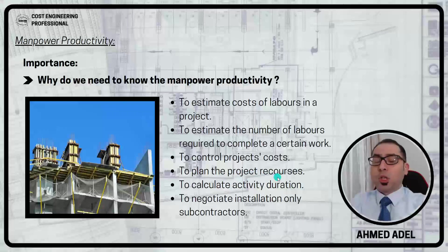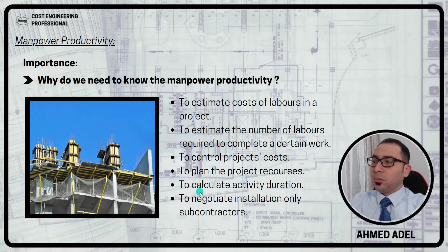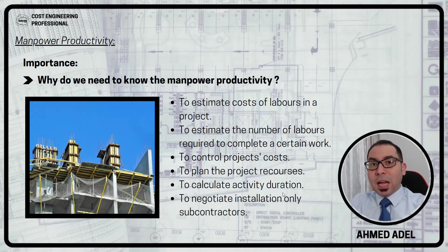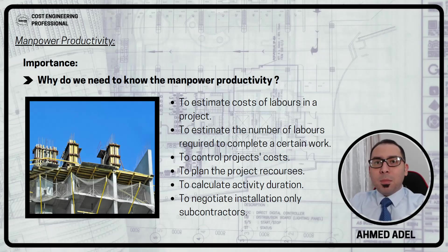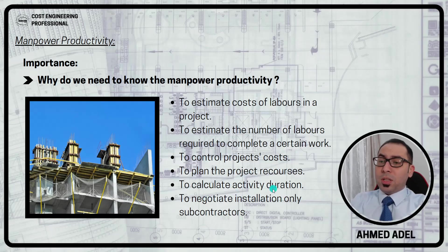Also to plan the project resources — if I am planning how many people I need for a certain job or what trades I need, I need to know the productivities and the quantities. Something else: to calculate activity duration. If I know the quantity of the activity and the productivity of the work crews, I can estimate the duration that activity will take — how many days or months I need to finish it and what resources are required.